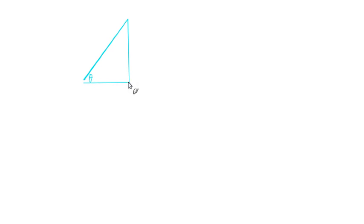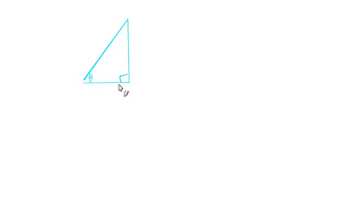We'll start 4.4 using this right triangle to introduce the ideas in this section. If we have this angle here, strategically placed, and we want to talk about the sine, cosine, and tangent, we express it in terms of the opposite side — opposite the angle — the adjacent side next to the angle, and the hypotenuse.